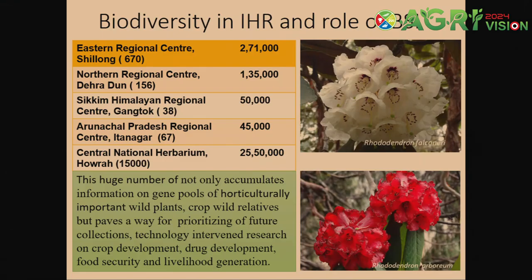The Botanical Survey of India has four regional centers in the Himalayan region: the Eastern Regional Centre with more than 275,000 herbarium specimens, the Northern Regional Centre with 135,000 herbarium collections, the Sikkim Himalayan Regional Centre, and the Central National Herbarium with more than 25 lakh collections of plant specimens. The importance of these huge collections is not only to document the gene pools of horticulturally and agriculturally important wild plants, but also to provide a basis for prioritizing future collections, technology interventions, crop development, drug development, and food security and livelihood generation.